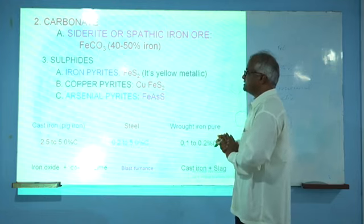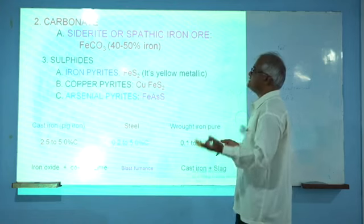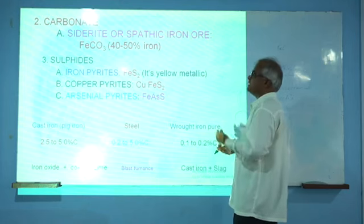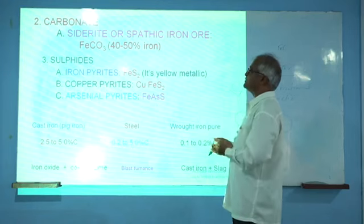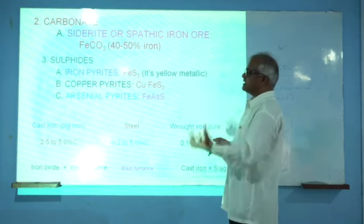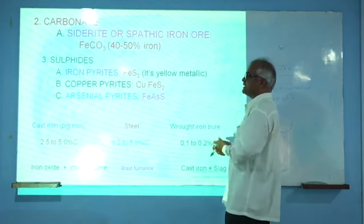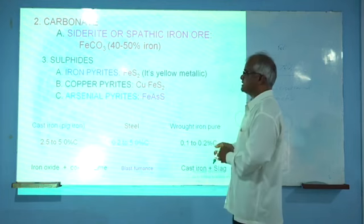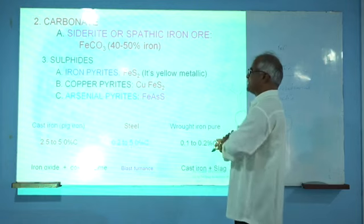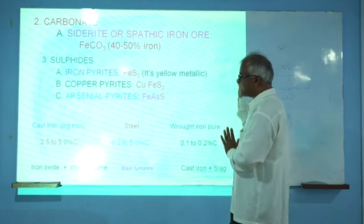Iron can be manufactured by occurrence in three forms: one is the oxide with three rocks, second is the carbonate, and third is the sulphide form with three types — iron pyrite, copper pyrite, and arsenical pyrite. The separation techniques used are gravitational force and magnetic separation.